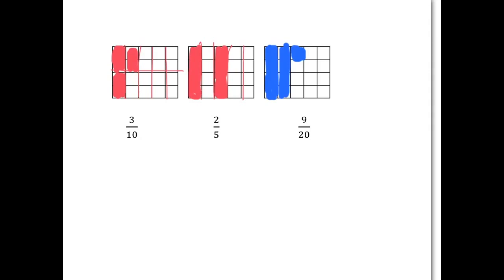And for nine-twentieths, well, the rectangle has already been cut up into these little pieces and there are 20 of them. And then you need to color in nine of them. So you'd have a picture something like that.